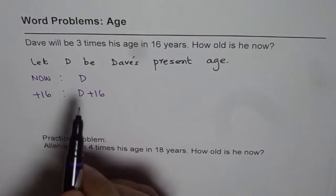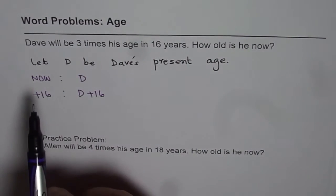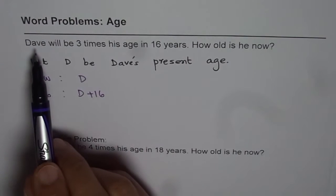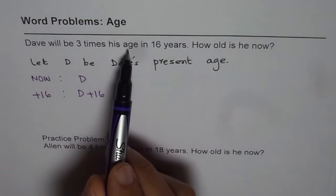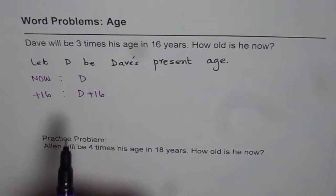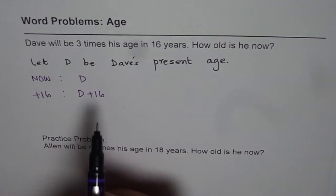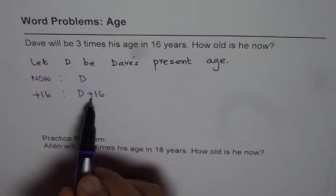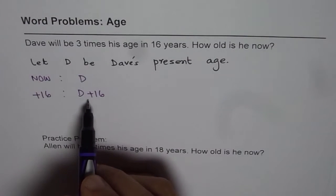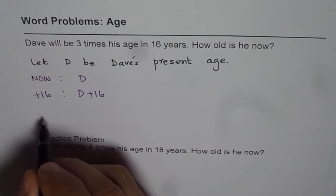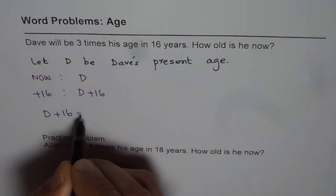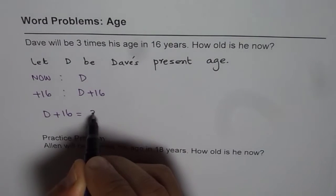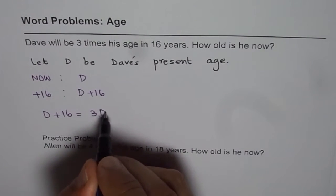Now the relation between these two conditions is that Dave will be 3 times his age in 16 years. That means after 16 years, Dave is going to be 3 times. So that gives us an equation, which is D plus 16 equals 3 times the present age of Dave.